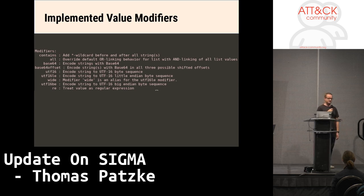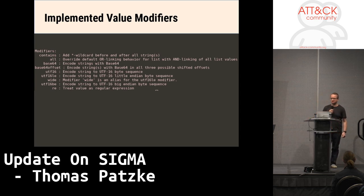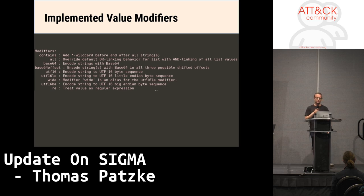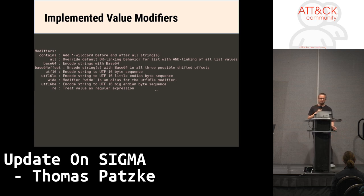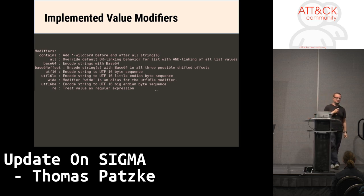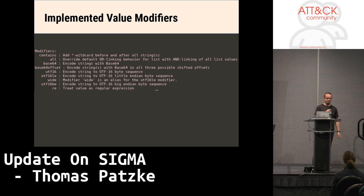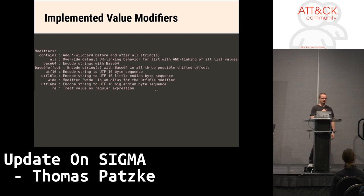We added further modifiers like base64, so you can let the Sigma converter do the encoding for you and keep plain values in the Sigma rules for better readability. There is also the base64offset modifier that calculates three different base64 encodings. When there is padding before the value, you can convert values into different encodings — mainly UTF-16, because this is what you usually have in PowerShell with encoded payloads.